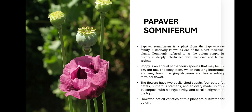Papaver somniferum is a plant from the Papaveraceae family, historically known as one of the oldest medicinal plants. Commonly referred to as the opium poppy, its history is deeply intertwined with medicine and human society. The poppy is an annual herbaceous species that may be 50 cm tall. The leafy stem, which has long internodes and may branch, is grayish-green and has a solitary terminal flower. The flowers have two easily shed sepals, four colorful petals, numerous stamens and an ovary made up of 10 carpels with a single cavity and a stigma at the top. However, not all varieties of this plant are cultivated for opium.